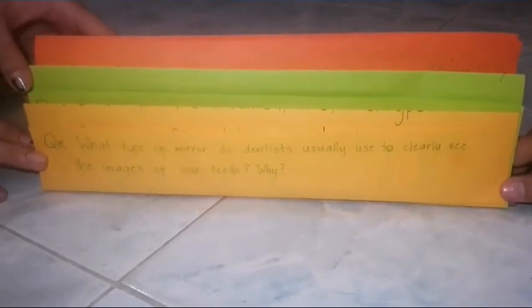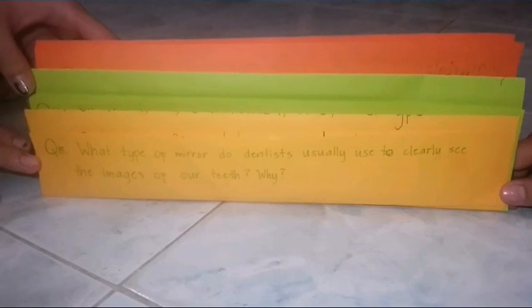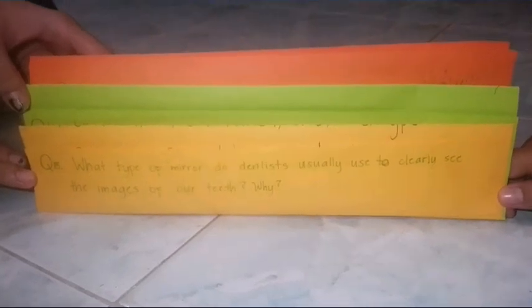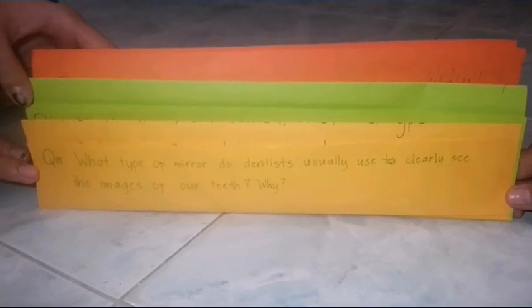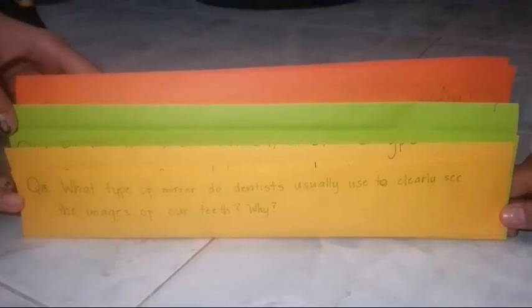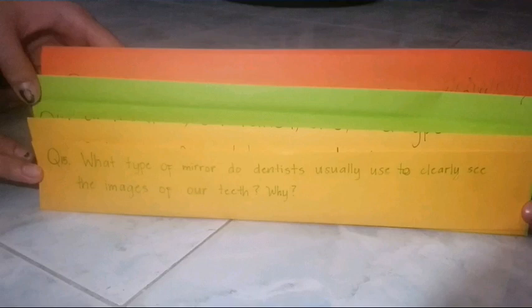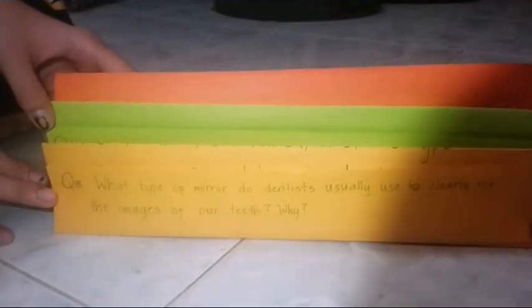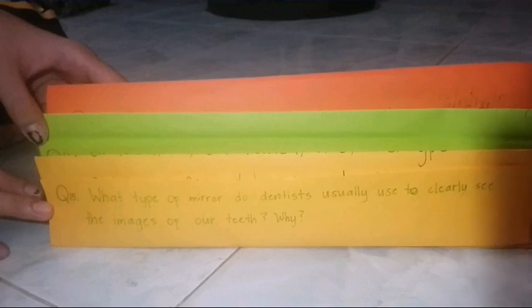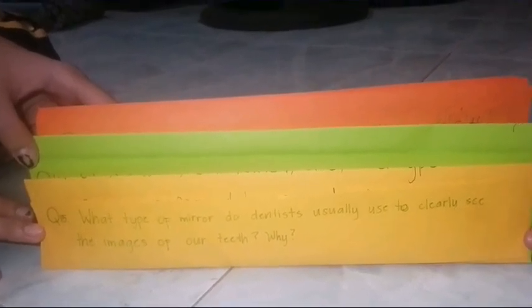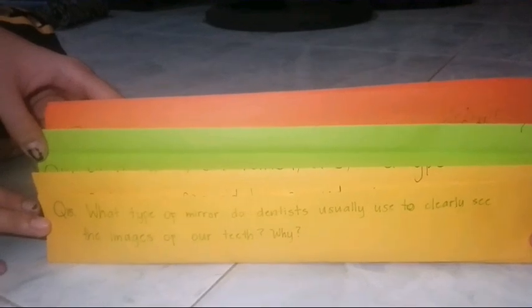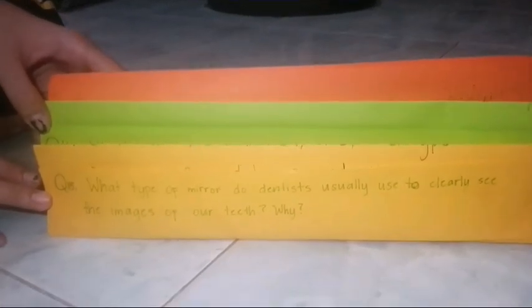Question 15. What type of mirror do dentists usually use to clearly see the images of our teeth? Why? A dentist's mirror is a concave mirror because the image appears larger or magnified, making it easier for the dentist to see the details of the object. This happens because the object is located between the mirror's focal point and the vertex or optical center of the mirror.